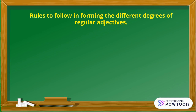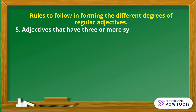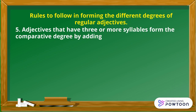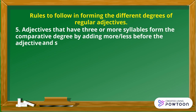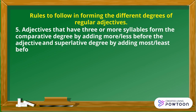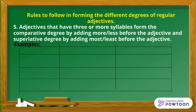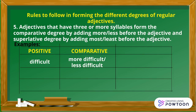Number 5. Adjectives that have three or more syllables form the comparative degree by adding more or less before the adjective, and the superlative degree by adding most or least before the adjective. Examples. Positive: difficult. Comparative: more difficult or less difficult. Superlative: most difficult or least difficult.